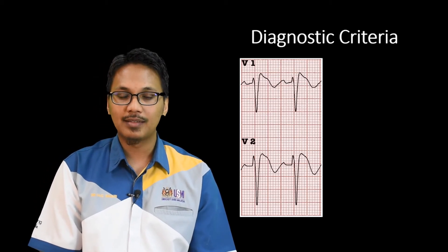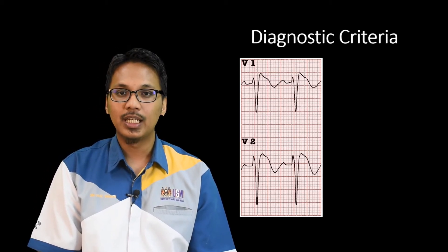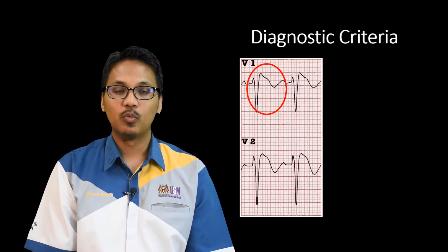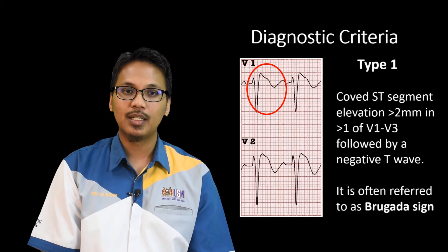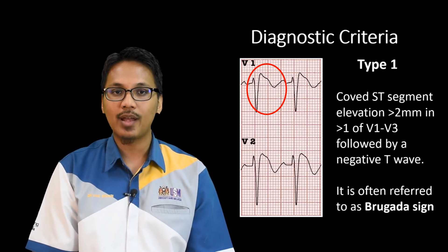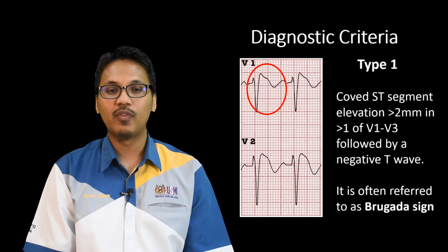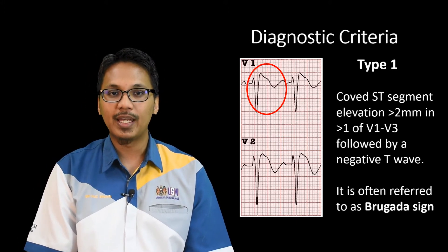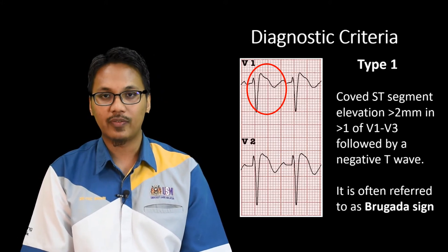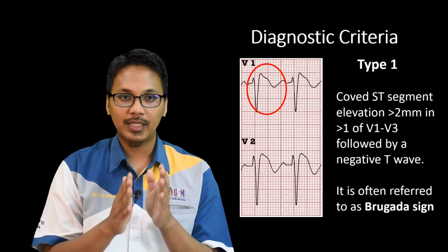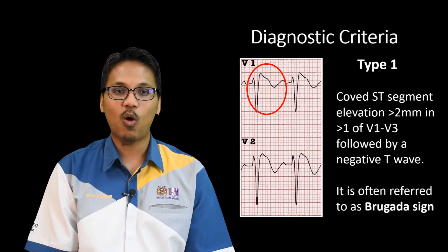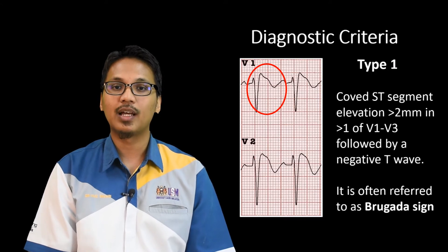As you can see from the example in the red circle, there is a coved ST segment elevation of more than 2 mm in more than one of V1 to V3 leads, followed by a negative T wave. This particular Type 1 ECG change is often referred to as the Brugada sign.